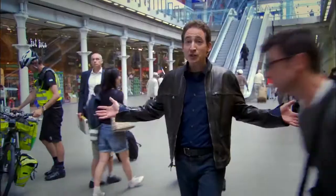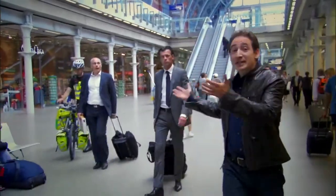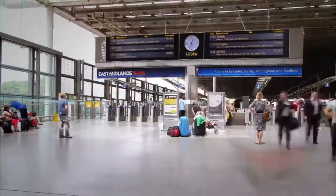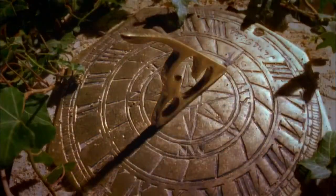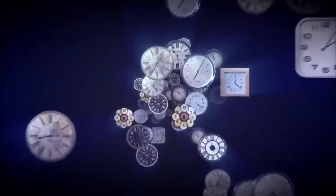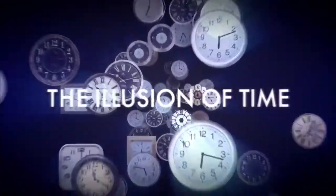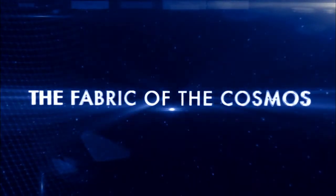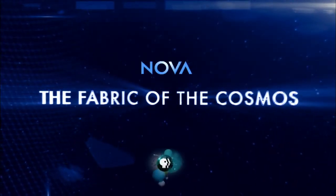Look around any train station, and you can see how time rules our lives. But time is not what it seems. There may be no distinction between past, present, and future. If time isn't what we all think it is, then what is it? Did it have a beginning? Will it have an end? Where did it come from? The illusion of time, on the next episode of The Fabric of the Cosmos.